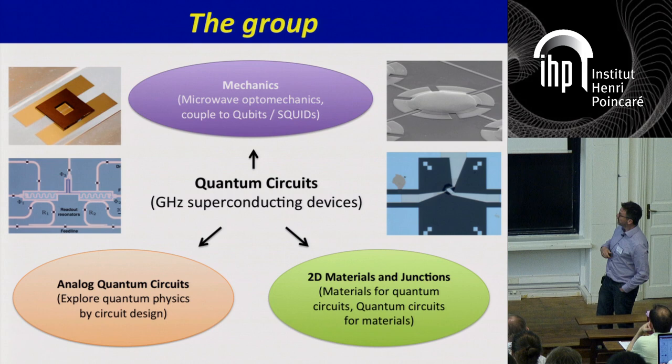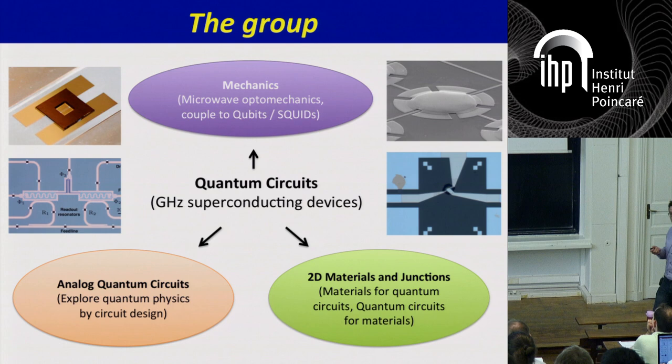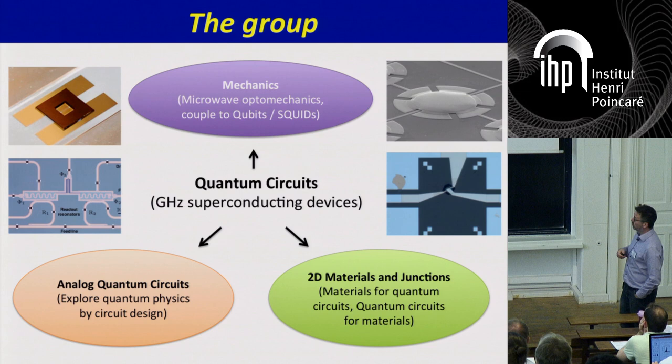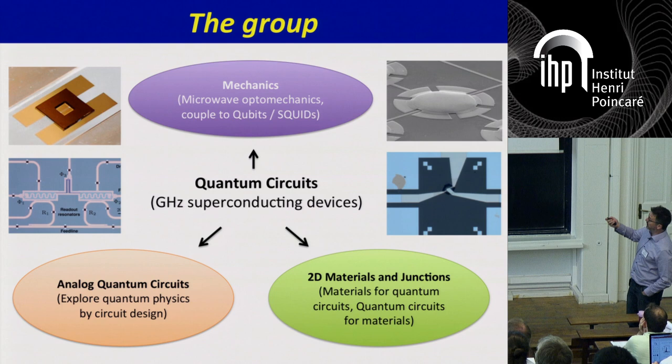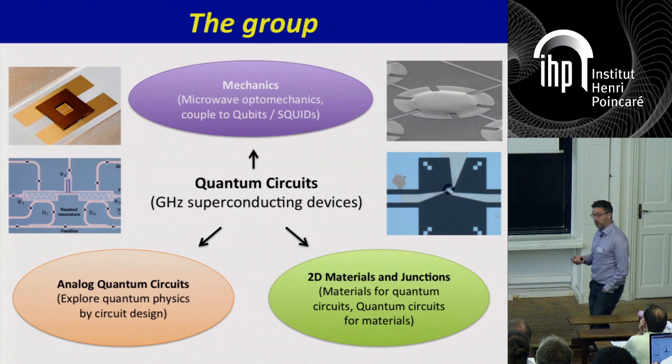I want to give a brief overview of my group in Delft. These days we work entirely on what I'll call quantum circuits — gigahertz microwave circuits that operate in our dilution refrigerator — and we pursue three different research directions. Our biggest research direction is actually studying mechanical objects like this metal drum or this vibrating membrane using these quantum circuits.